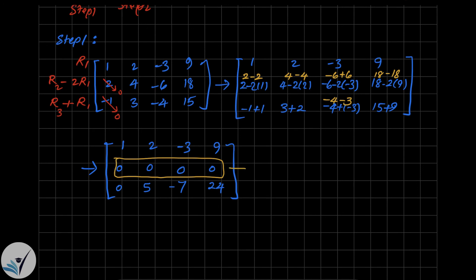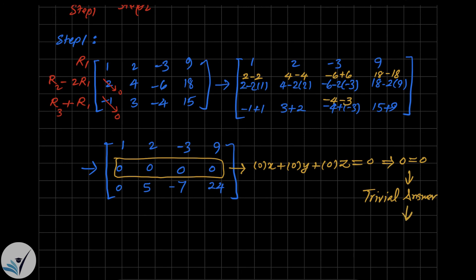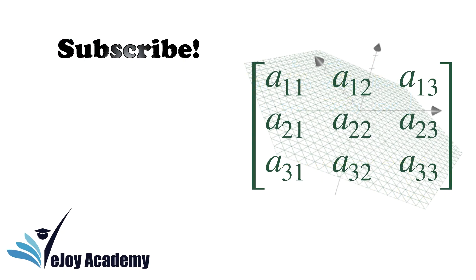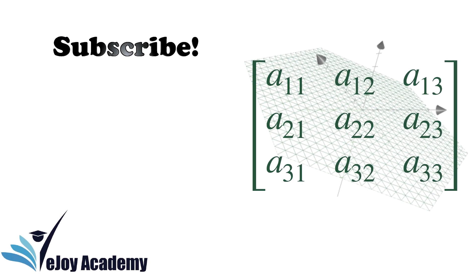Since the second row is all zeros, converting it to equation form gives 0·x + 0·y + 0·z = 0, which means 0 = 0 — a trivially true statement — confirming infinitely many solutions. I hope these three examples help you better understand the row reduction method for solving systems of linear equations. If you have questions, leave them in the comments and I'll get back to you. If this video helped, please hit the like button and subscribe.